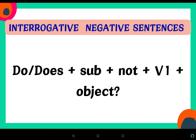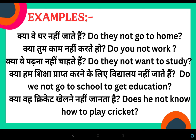After this comes interrogative negative sentences — sentences where a question is asked and it is negative. The structure is: Do/Does + Subject + not + V1 + Object. For example: 'क्या वे घर नहीं जाते हैं?' — Do they not go home? According to subject 'they', 'do' is used. Do they not go to home?